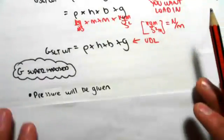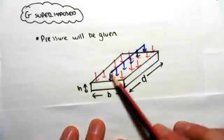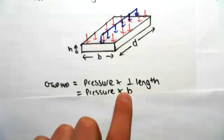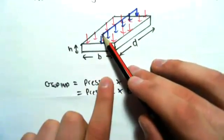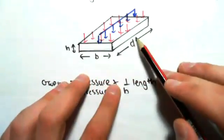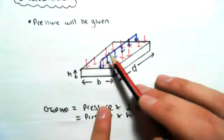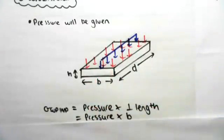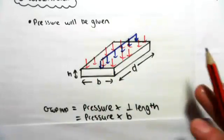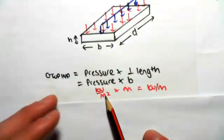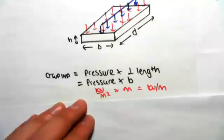Now the superimposed dead load — we're going to be given a pressure normally. So, say, a carpet has a pressure of 1 kPa. We're going to be going from a pressure to a linear load. All we do is: the superimposed dead load is the pressure times by the perpendicular length. It's the same idea — if we want the linear load going in this direction, we multiply by the one perpendicular, so we multiply by b, excluding d. If we want the linear load going in this direction, we multiply the pressure by the length perpendicular to that load. So we go pressure times b. A pressure is kPa — kilonewtons per metre squared — times a length in metres, giving us kilonewtons per metre: that UDL.